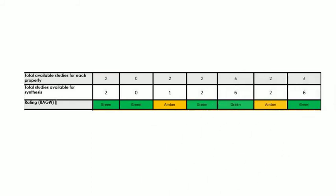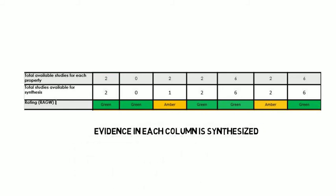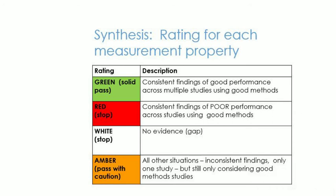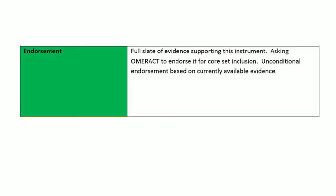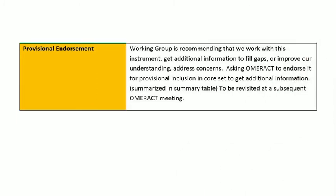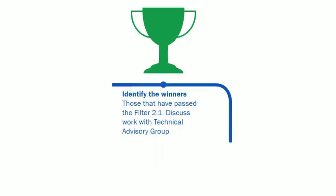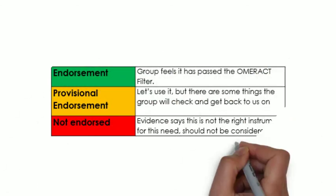When the evidence is gathered for all the measurement properties, and the working group feels they have done as much as they can at this point in time, the evidence is synthesized for each measurement property and given a green, amber, or red rating, and then that is synthesized to make an overall recommendation. We look for at least two pieces of evidence from good quality studies that supports the performance of the instrument. The working group decides whether the instrument should be endorsed, usually reserved for solid green performance across all the measurement properties in OFISA, provisionally endorsed, which means that we should use it but there are some things that the group will check on and get back to us, or not endorsed for use. OMRACT's technical advisory group will review the working group's work and verify justification for the decision and rigor of methods. The TAG and the working group will work together to agree on the final rating of the instrument.